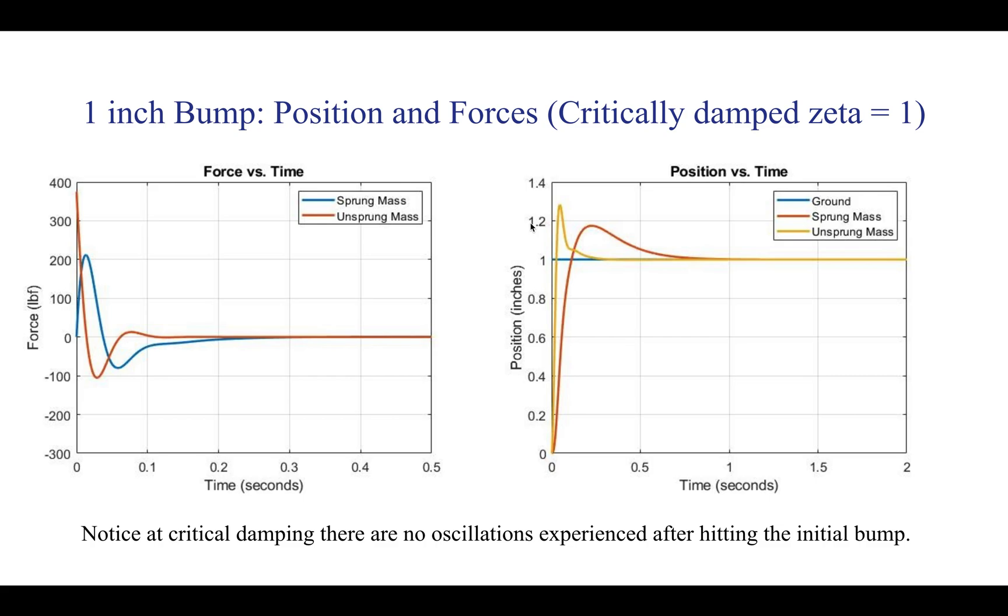We have the critical damping case. You can see on the position on the right that the system, the sprung mass and the unsprung mass don't oscillate. Basically they hit the bump, they go up and then they return down to zero. There's no oscillations after hitting the initial bump and you can see the forces are very similar as well.